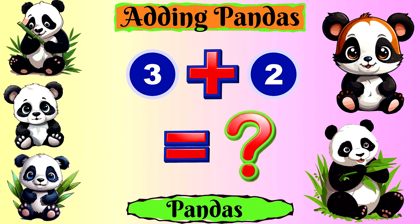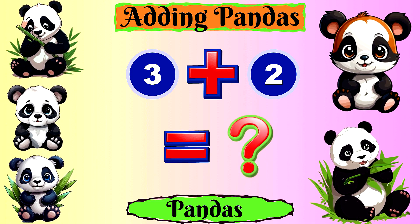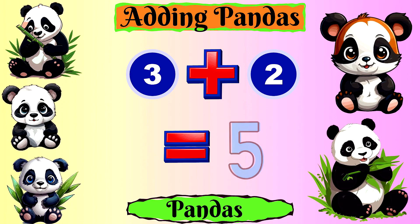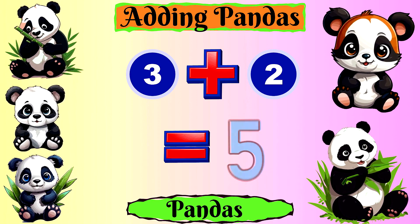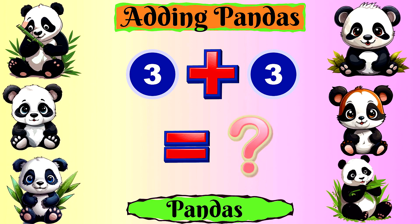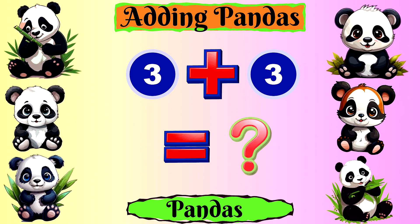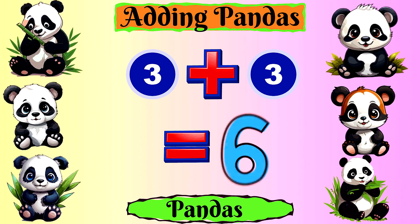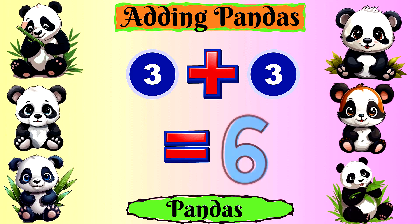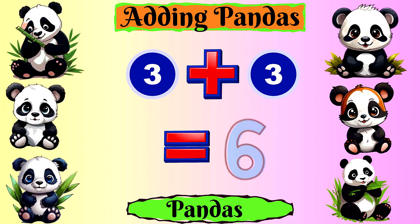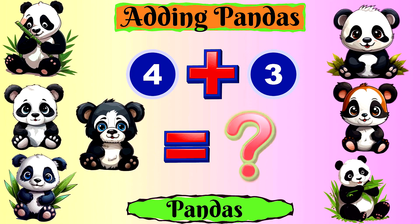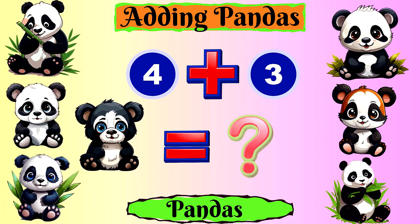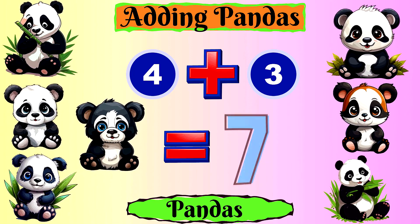Three pandas plus two pandas equals five pandas. Three pandas plus three pandas equals six pandas. Four pandas plus three pandas equals seven pandas.